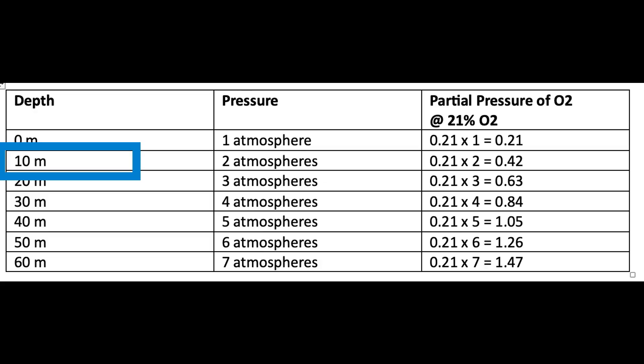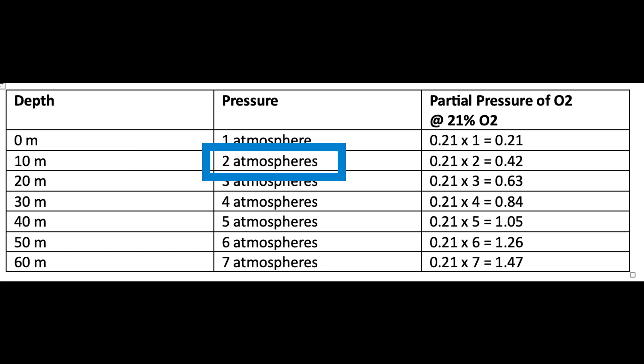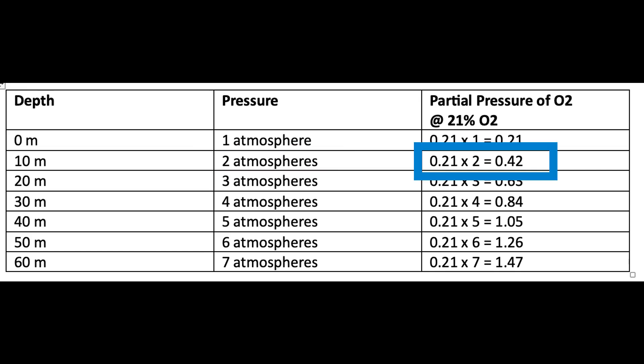If you go down to 10 meters, the pressure is going to be two atmospheres. That means your 0.21 partial pressure of oxygen at one atmosphere is now 0.42 partial pressure of oxygen, because there are now two atmospheres. That keeps going down the list.